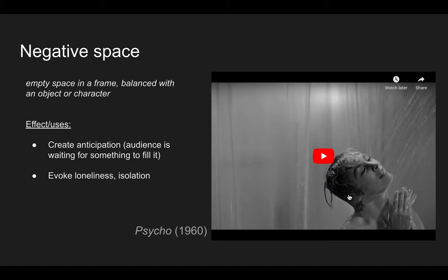Negative space can heighten a sense of anticipation. Our eyes and brains, when looking at an image, want balance — whether because film and photography has trained us to expect it, or because we simply like balance. Regardless, when we look at a photograph or a shot in a film, balance makes us feel at ease. When we don't have it, it can create unease, depending on the context.